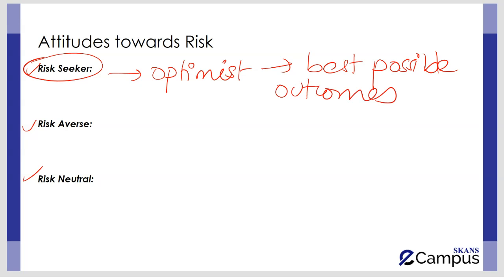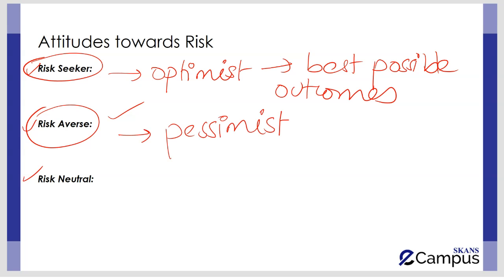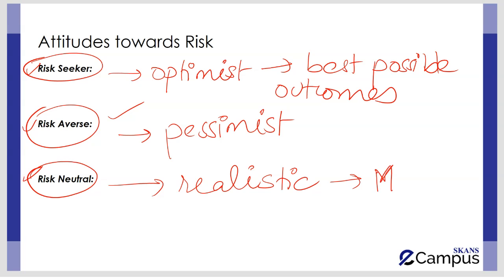A risk averse manager is a person who assumes the worst outcome might occur — they are always looking at the worst possible outcome and will make a decision that minimizes risk for the organization. These are the pessimists in decision making. The third attitude is the risk neutral person, a decision maker who balances risk and return, focusing on the most likely options. They are best described as realistic managers.